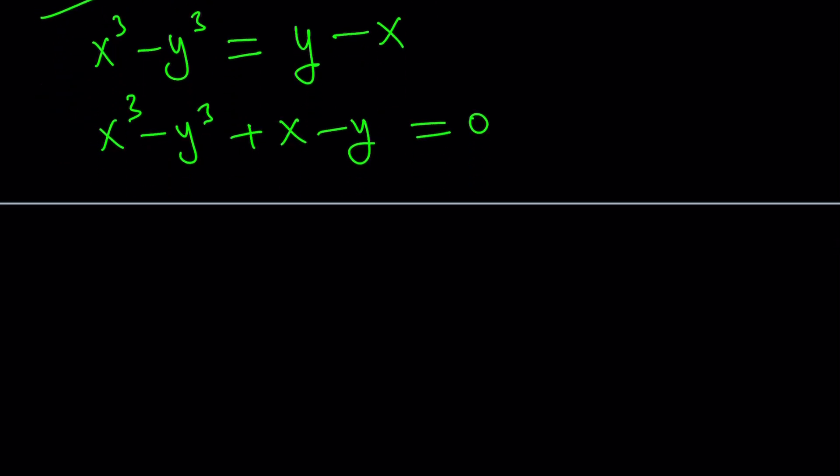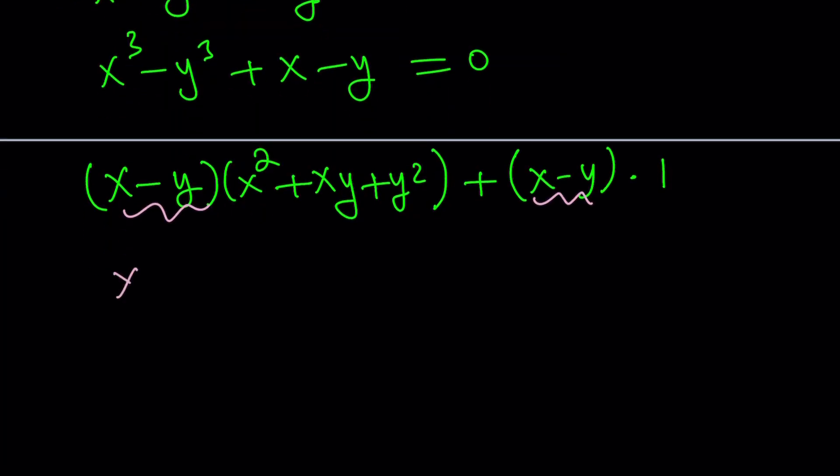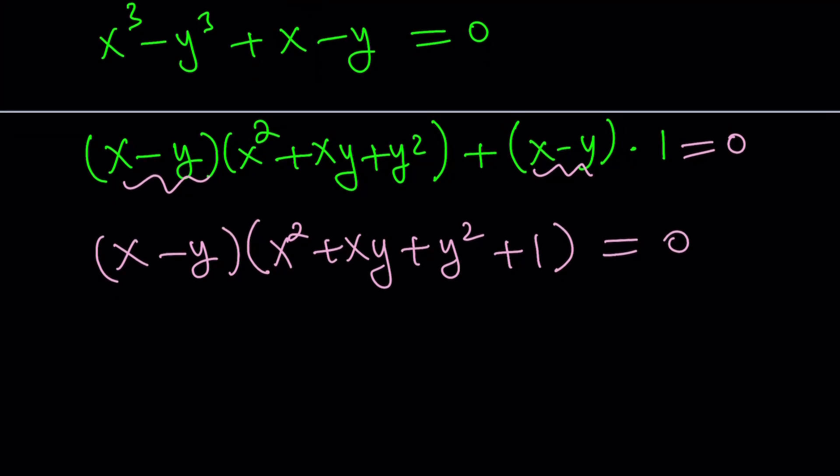x³ - y³ + x - y = 0. And then I'm going to factor out x - y here. So that's the difference of two cubes. Hopefully you know this formula. x - y is just multiplied by 1 so that I can get a common factor out. So we can take out x - y, and the second parenthesis will be x² + xy + y² + 1 = 0. So we kind of got it factored, and from here we can set each factor equal to 0 and find the solutions.